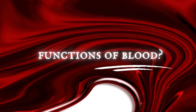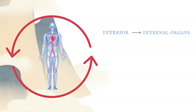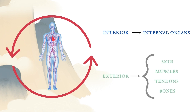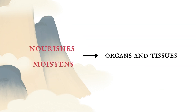What are the functions of blood? Blood flows in the blood vessels. In the interior, it reaches the internal organs. In the exterior, the skin, muscles, tendons, and bones. It continuously nourishes and moistens the organs and tissues in the entire body, thereby maintaining their normal activities.